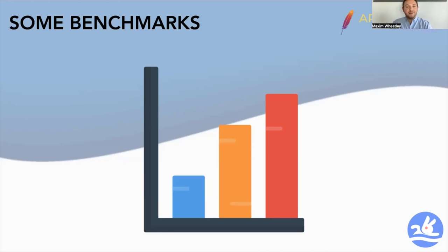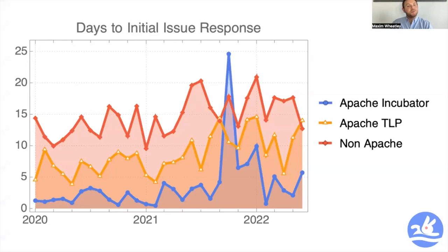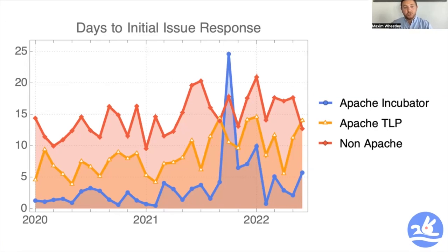We used DevLake to assess the days to initial issue response, comparing the Apache incubator projects, the Apache ecosystem in general, and the leading non-Apache projects. The key takeaway is that overall, the Apache incubator projects are extremely responsive — a great sign showing that maintainers and community members are all extremely engaged and looking to help their community members as quickly as they can. Overall, the Apache ecosystem is also a more responsive community when compared to many of the largest projects, which is something the Apache ecosystem should be proud of.